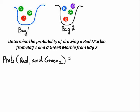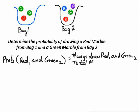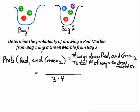Here's the way you do it. To calculate it, let's use the counting method — pretend you don't have any fancy formulas. We need the number of ways we can draw a red from the first bag and the number of ways we can draw a green from the second bag, then divide by the total number of ways we can draw any marble from both bags. There are three ways to grab a marble from bag one and four ways from bag two, so the denominator is twelve total ways.